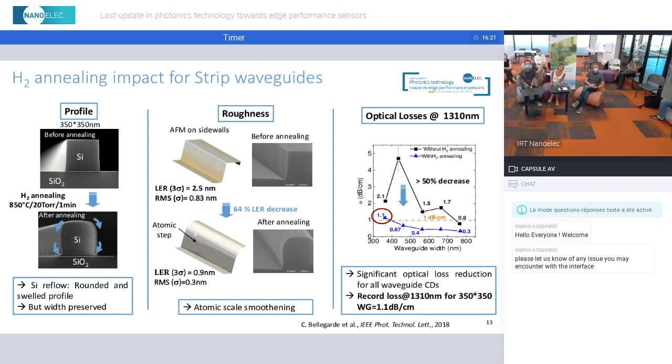On your left, you have SEM images showing how the profile evolves under such a treatment. You can see that we obtain a kind of reflow profile with a rounded corner and sidewall profile, but in the end, the volume is preserved as well as the width at the middle.